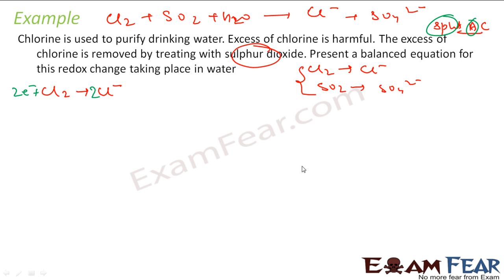Let's take the second one. Second one I have SO2 gives SO4 2-. Let's balance this. So atom, sulfur is same. Oxygen we have 4. Oxygen we have 2. So let's add 2 water molecules here. Oxygen is balanced. What about hydrogen? Hydrogen we have 4 here. We have 0 here. So let's add 4H+.